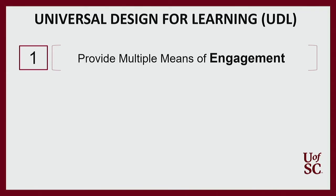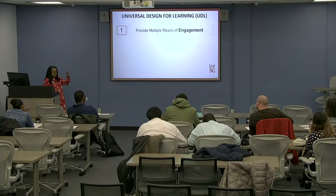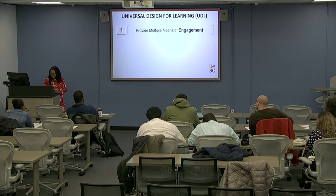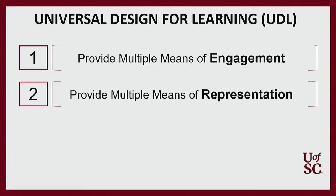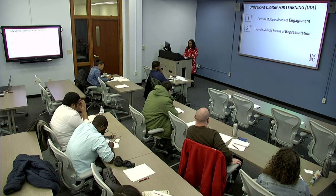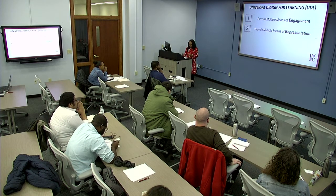Engagement is the 'why.' Why is the student taking this course? Why do you want the student to be engaged? Is the student even motivated? The second principle is to provide multiple means of representation — the 'what.' This refers to how you will present your course content. You want to really think about how you're going to present material, especially if you're converting from a face-to-face to an online class.